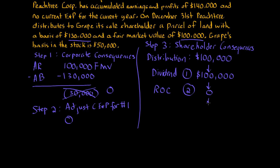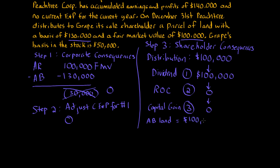The last stop on the three-part waterfall is capital gain distribution, which is also zero because the entire $100,000 was consumed at the dividend stage. Finally, under section 301(d), the shareholder's adjusted basis in the land received equals its fair market value — not the corporation's basis — so Grape's basis in the land is $100,000, the fair market value at the date of distribution.